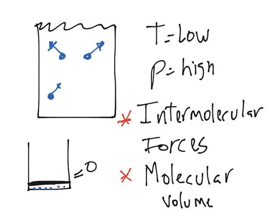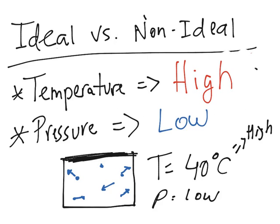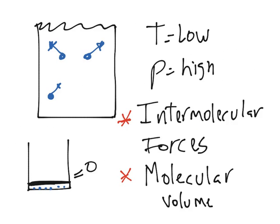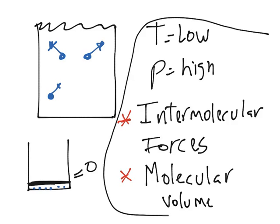So, instead of just thinking like in an ideal gas, there's two factors, the temperature and the pressure. In a non-ideal gas, we have to take into account the temperature, the pressure, the intermolecular forces, and the molecular volume. So, that's really the difference between an ideal and a non-ideal gas.